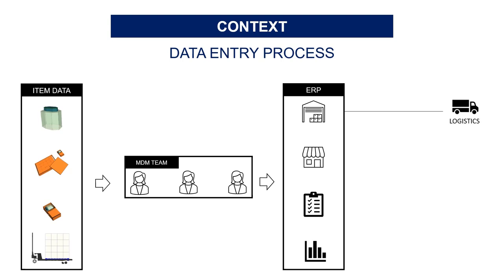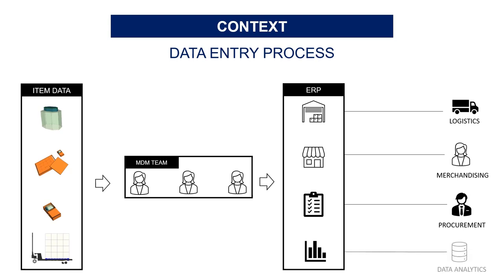Once the data is ready, it can be used by the team. The logistics team can receive the products in warehouses and stores. The merchandising team can follow sales and stock levels in stores. The procurement team can send purchase orders to suppliers, and the analytics team can include these new items in their reports. Your item can now be purchased, transferred, stored in warehouses, and sold in stores.